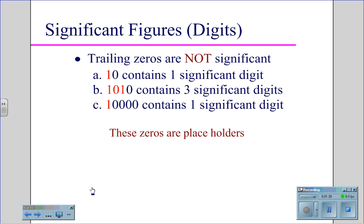Trailing zeros are not significant. So in the number 10, the zero is not significant — you have one significant digit. In 1010, the last zero is not significant. The zero between the ones is significant, so you have three significant digits. 10,000 contains only one significant digit, because all the other zeros are trailing zeros — those zeros are called placeholders.